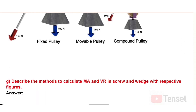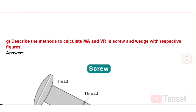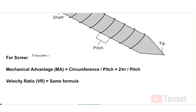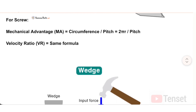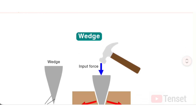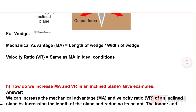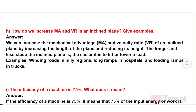G) Describe the methods to calculate MA and VR in screw and wedge. Answer: For a screw — Mechanical Advantage (MA) = Circumference / Pitch = 2πr / Pitch; Velocity Ratio (VR) = same formula. For a wedge — Mechanical Advantage (MA) = Length of wedge / Width of wedge; Velocity Ratio (VR) = same as MA in ideal conditions.